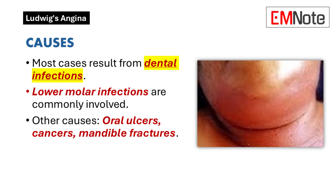Dental infections are the leading cause of Ludwig's angina, accounting for a majority of cases. These often involve infections of the lower second and third molars, where the roots extend below the myelohyoid muscle. Other potential causes include oral ulcers, infections linked to oral cancers, fractures of the mandible, submandibular gland infections caused by salivary gland stones, and penetrating injuries to the floor of the mouth.